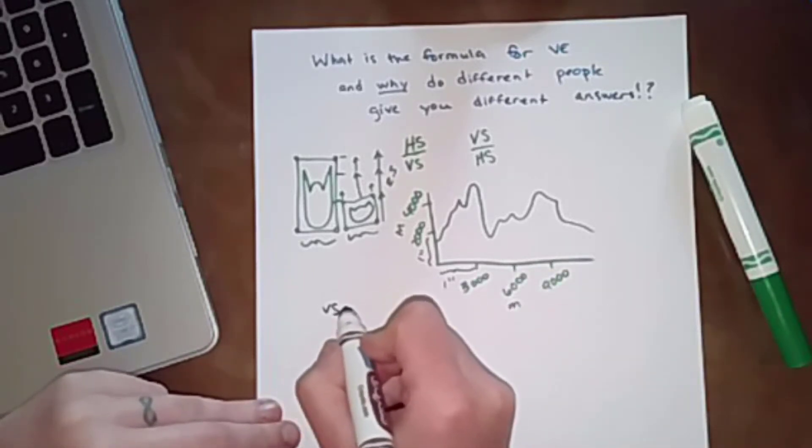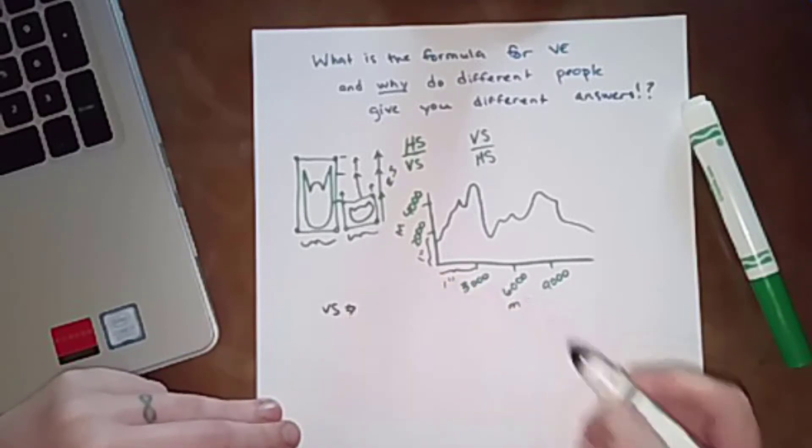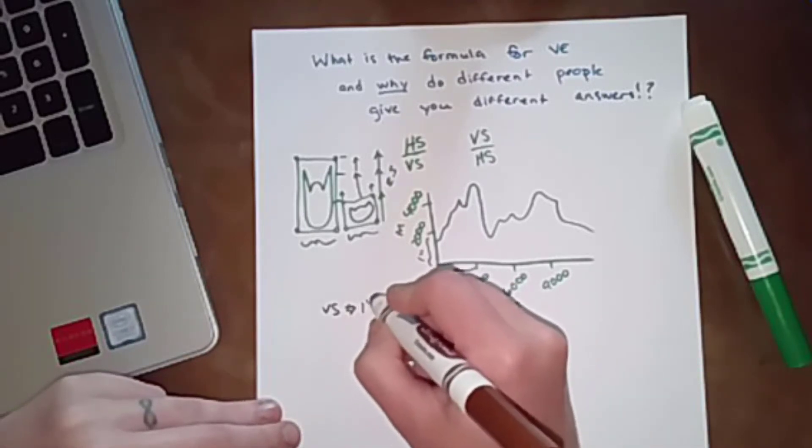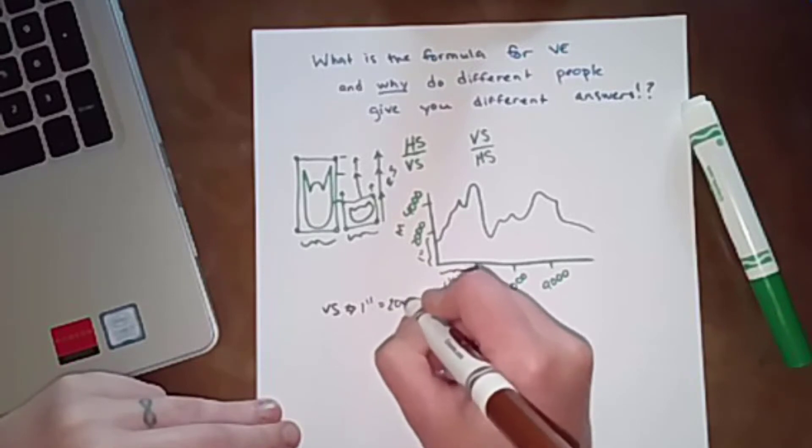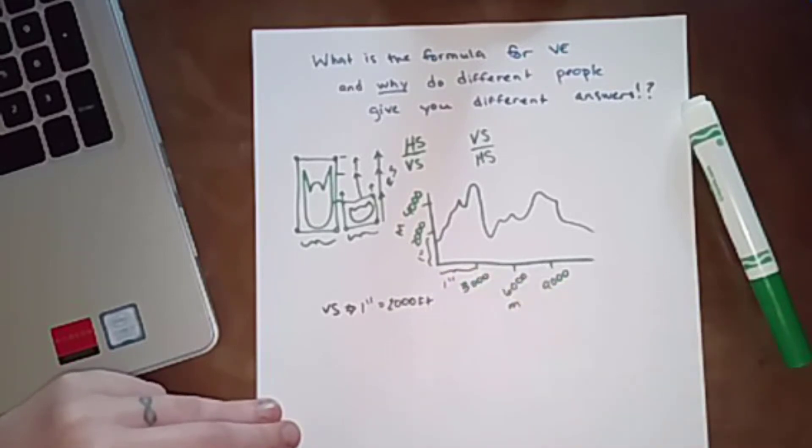So my vertical scale is gonna be 1 inch is 2,000 meters. My horizontal scale is 1 inch is 3,000 meters.